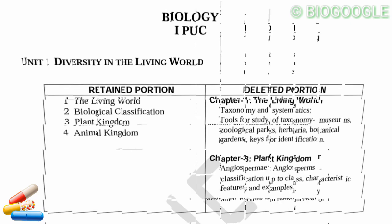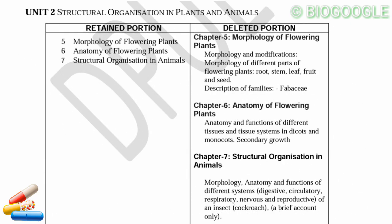Next, Unit 2 is Structural Organization in Plants and Animals. Chapter 5 covers morphology of flowering plants — morphology and modification of different parts: root, stem, leaf, fruit, and description of families. Chapter 6 covers anatomy of flowering plants — anatomy and functions of different tissues and tissue systems in dicots and monocots; secondary growth is deleted.